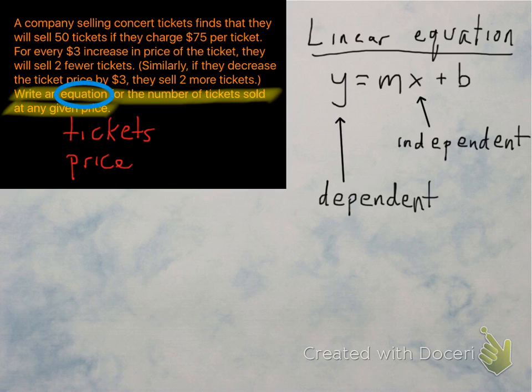It's definitely the last one. The number of tickets is the dependent variable. So your X is price and your Y is tickets.